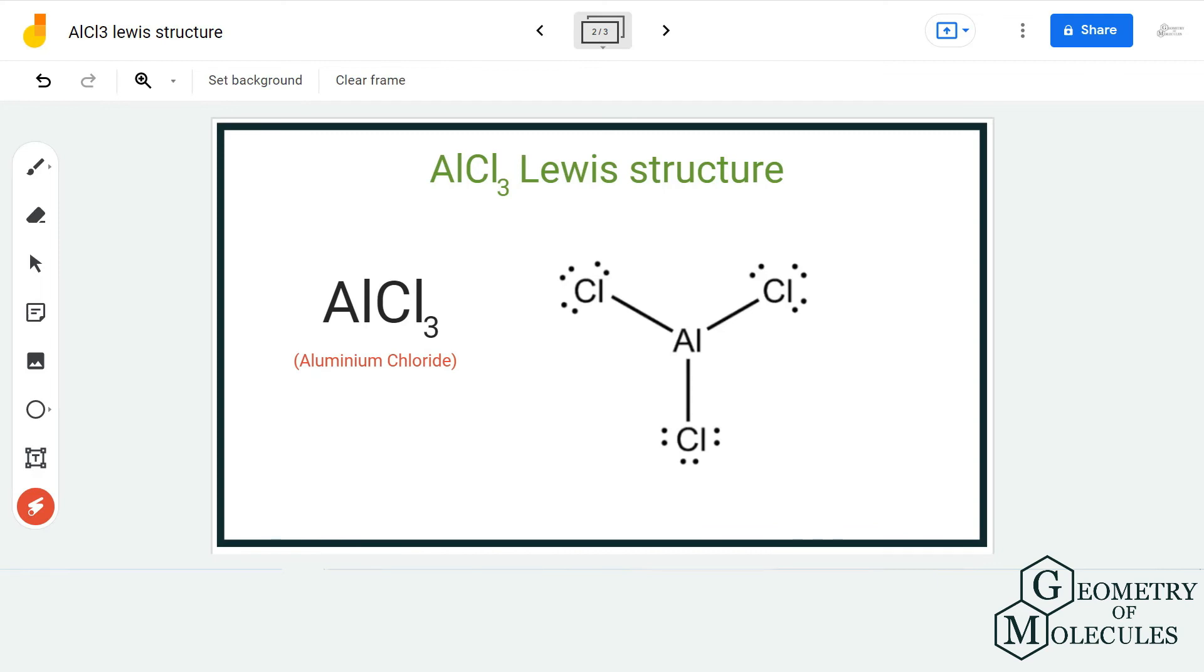To make sure, you can also calculate the formal charges for aluminum and chlorine atoms for this Lewis structure. I am going to leave the link for formal charge calculator in the description box below. You can also use this formula to find out the formal charges, but the formal charges will come out to be zero. Hence, this is the most accepted and relevant Lewis structure for AlCl3.